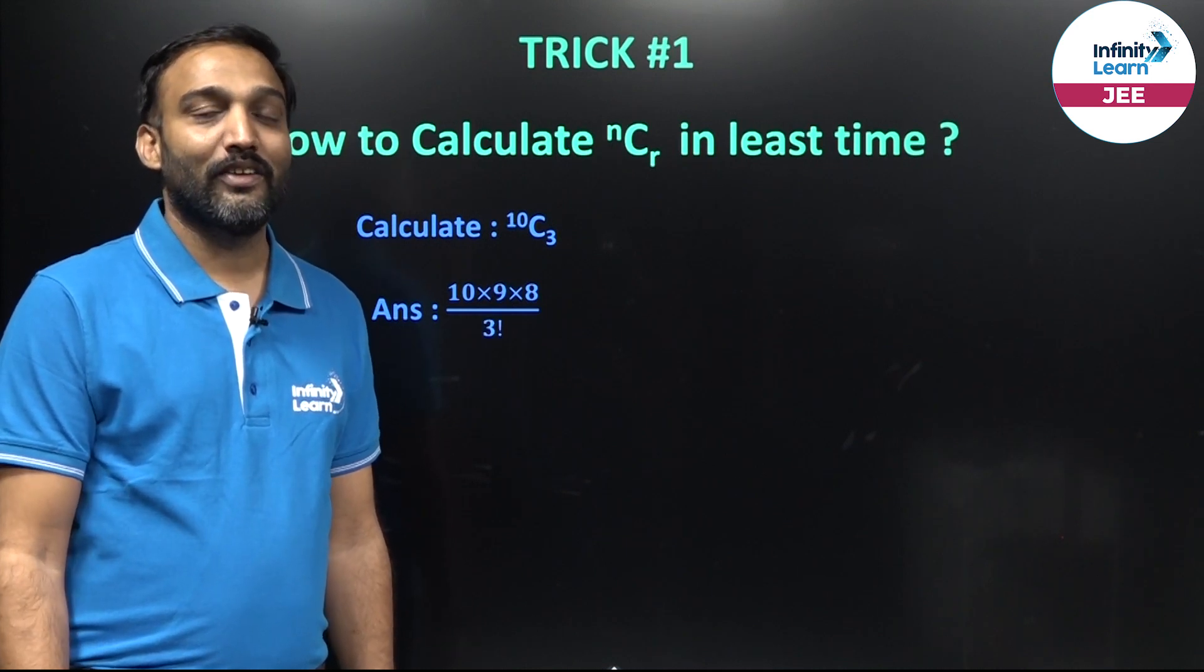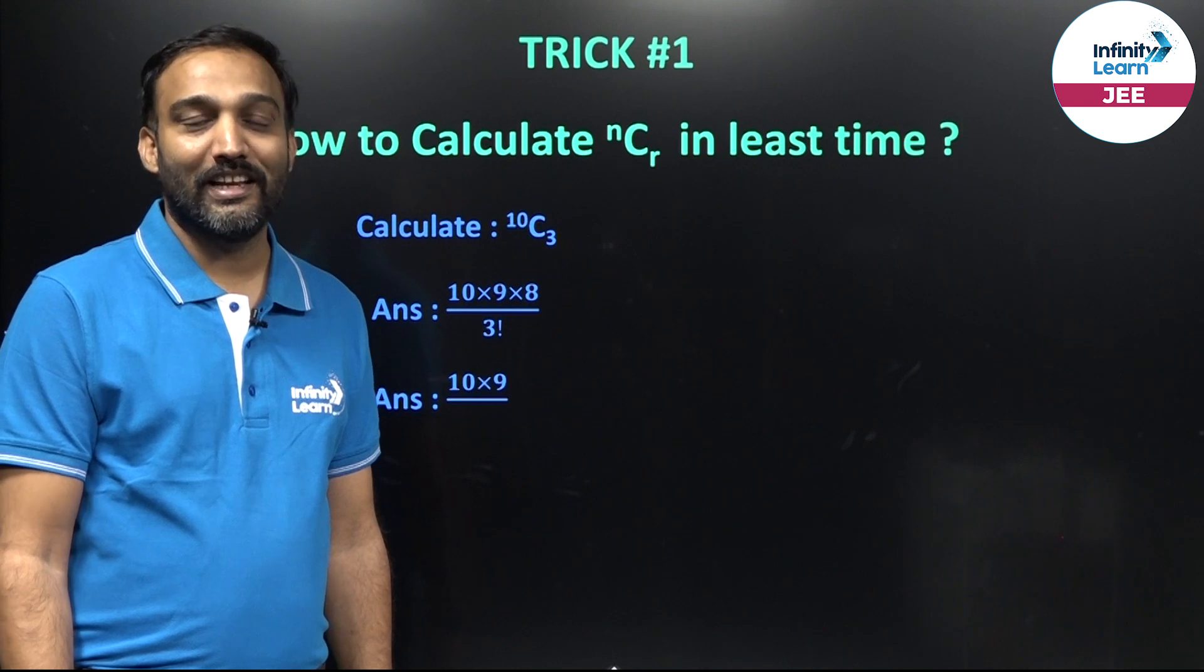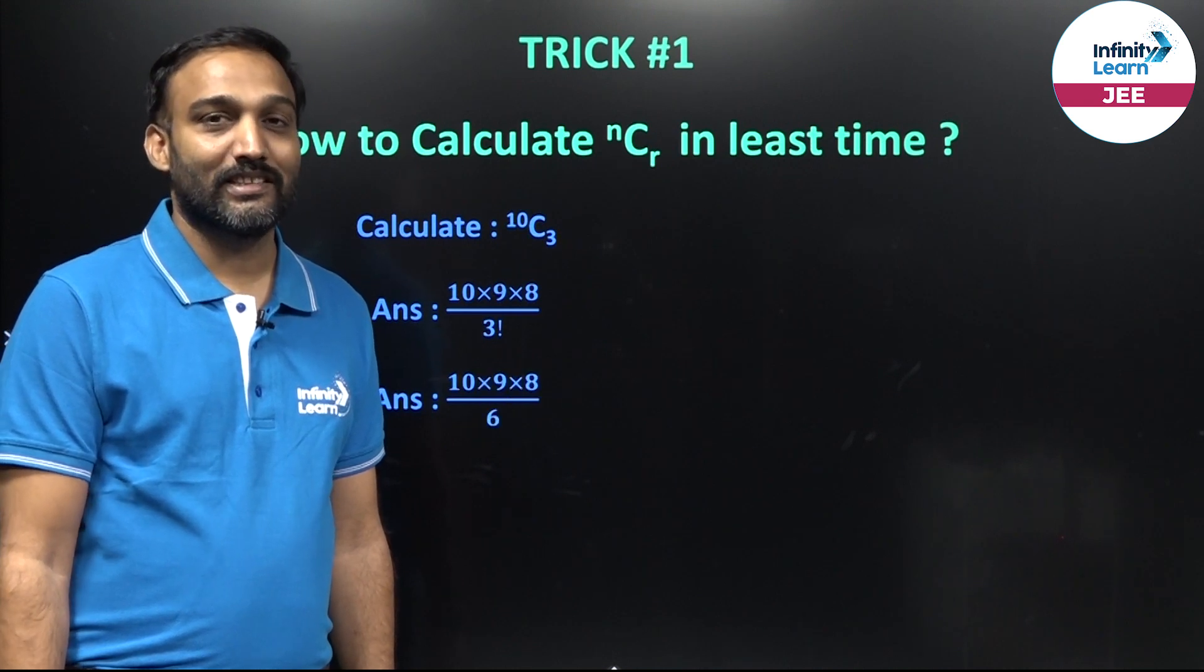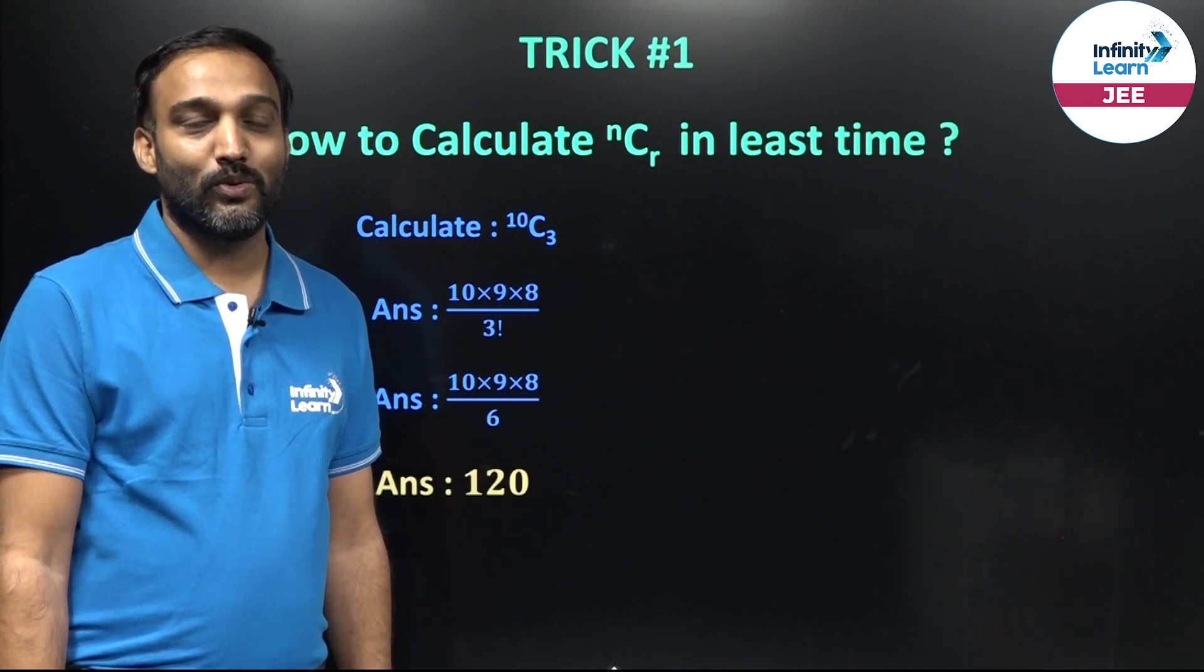3 factorial is 6. So, I can write my answer as 10 into 9 into 8 divided by 6 which will be equal to 120.